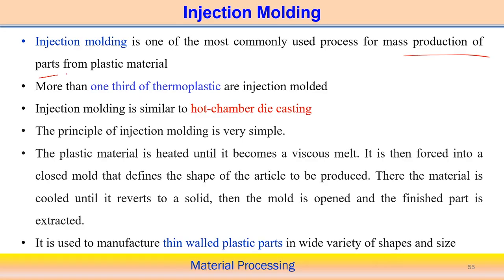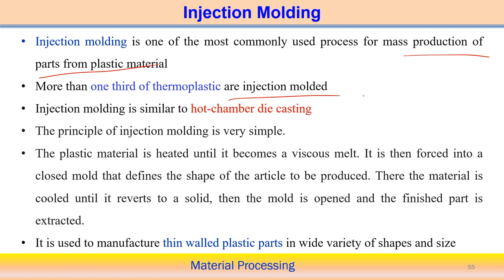Injection molding is used mostly for the mass production of plastic component parts. In principle, I already discussed that the basic steps are the same as associated with the extrusion process, but there is a minor difference. More than one third of the thermoplastics are injection molded. This process is also similar to the hot chamber die casting process.